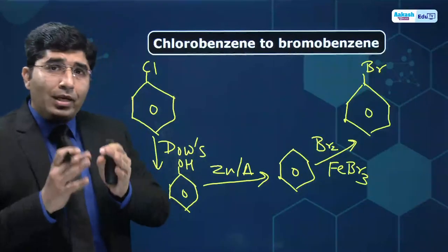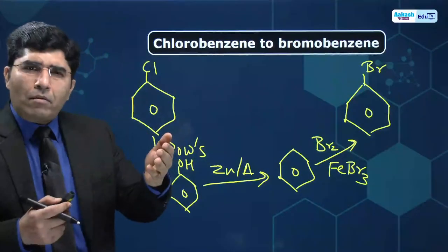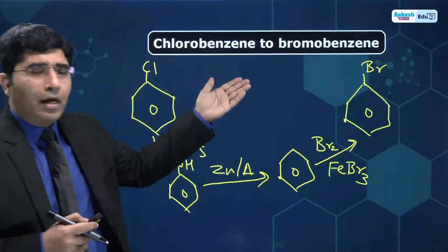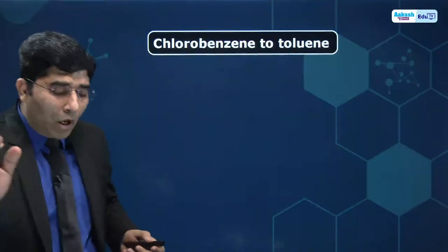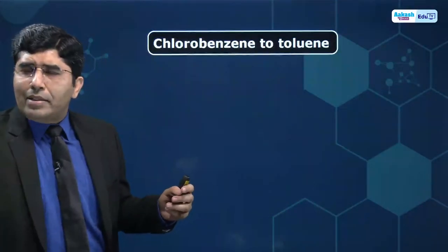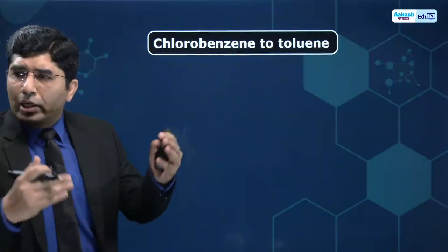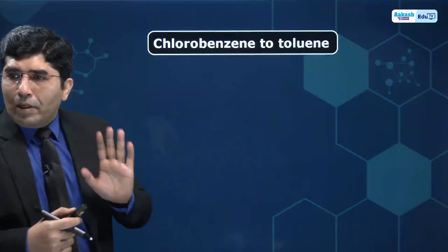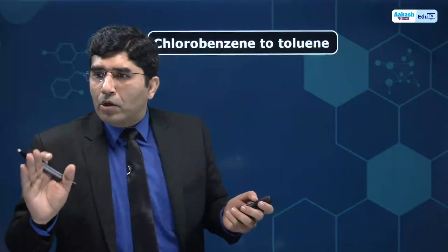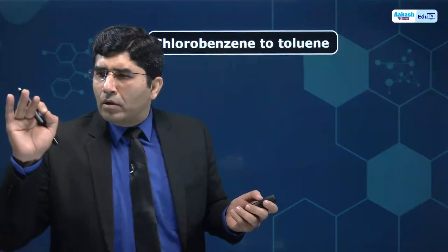So we have converted chlorobenzene to benzene, chlorobenzene to bromobenzene has been done. Now let us talk about chlorobenzene to toluene. Let's see how — Srivastav and others, please answer. Let me check the messages.